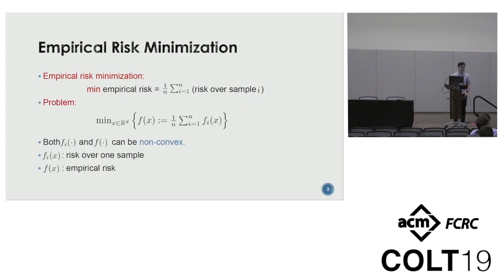In many problems, we are given a set of samples and there is a loss corresponding to each sample. We hope to minimize the average loss over the dataset. This is called empirical risk minimization. We model our problem as follows: we hope to minimize the function F, which is the average of individual functions. Here, both f_i and F can be non-convex. We assume the individual function is gradient Lipschitz and Hessian Lipschitz. You can think of f_i as a risk over one sample and F as an empirical risk. This is also called a finite sum formulation in the literature.